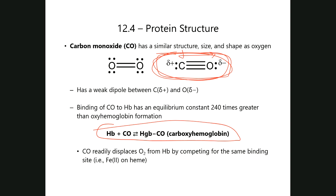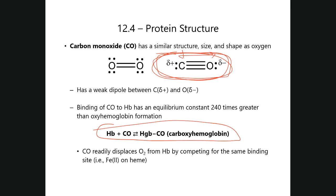Carbon monoxide actually binds to hemoglobin with much greater affinity than oxygen does. What that leads to is that the carbon monoxide will very easily displace the oxygen from the hemoglobin, and the moment you lose oxygen from hemoglobin, you have no oxygen-carrying capacity in your blood.